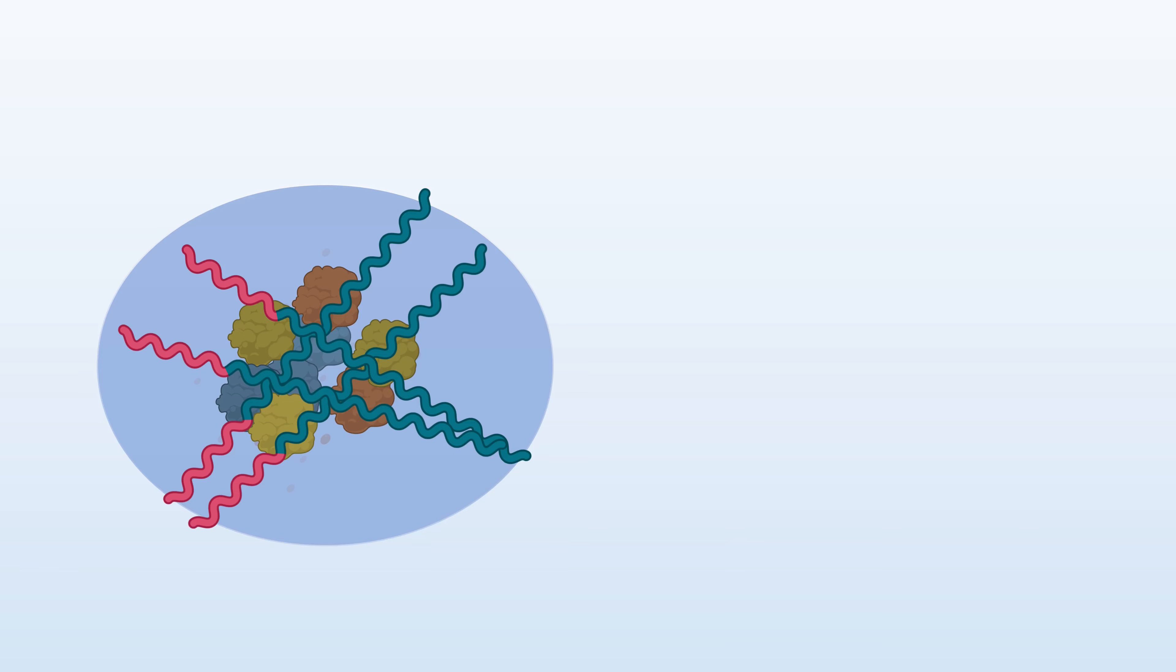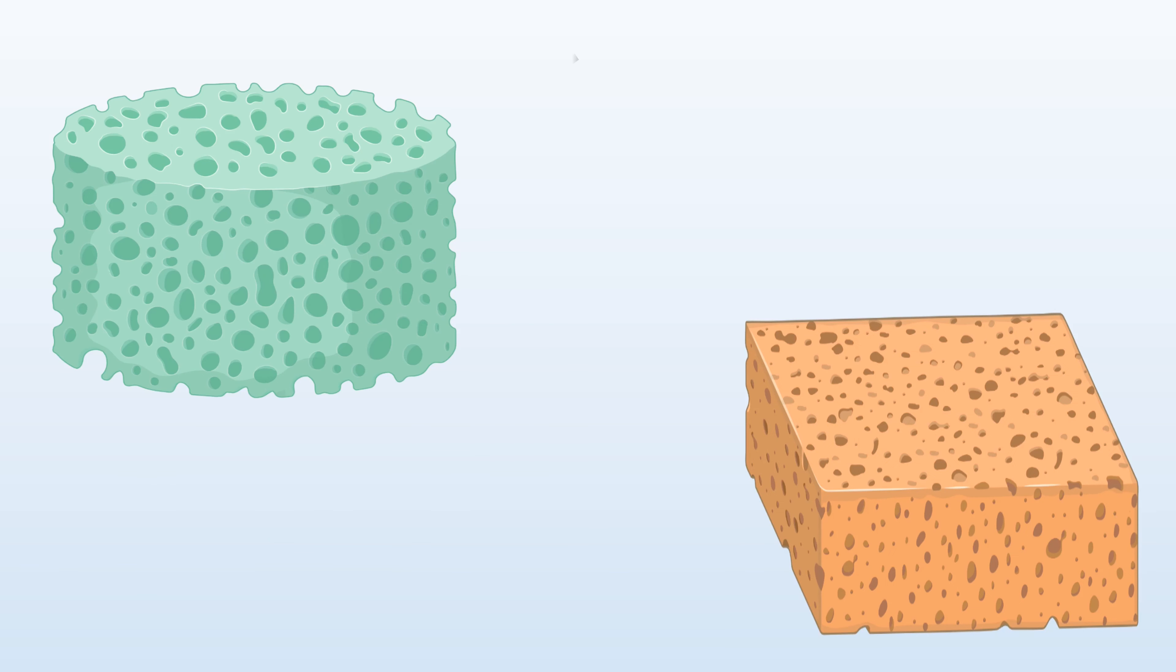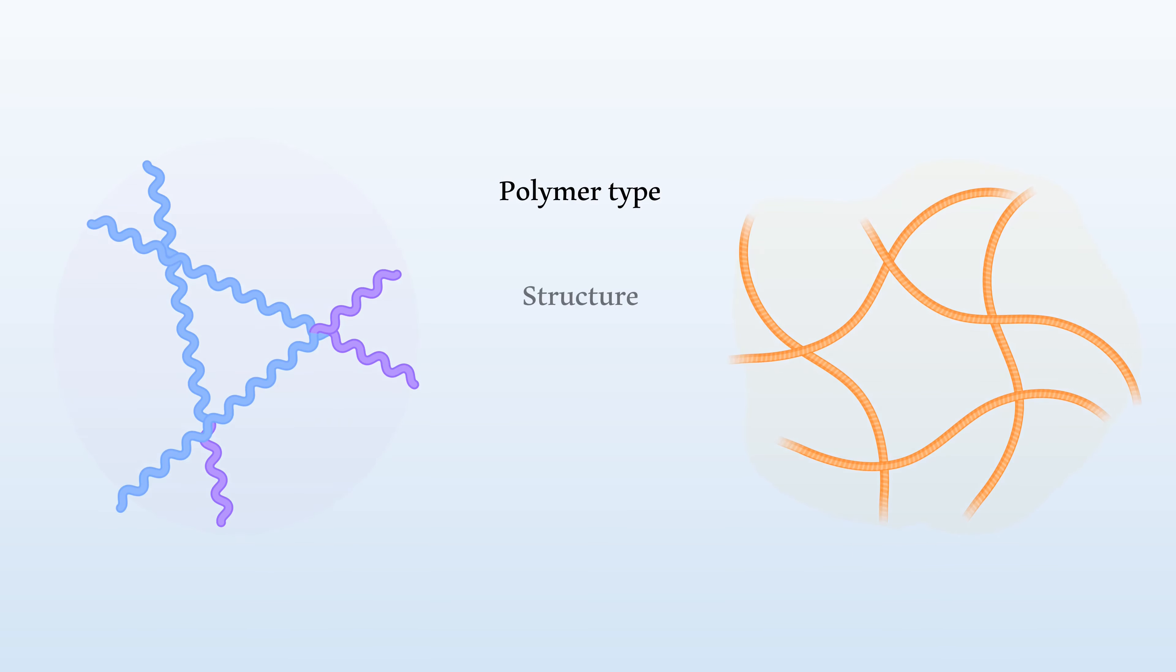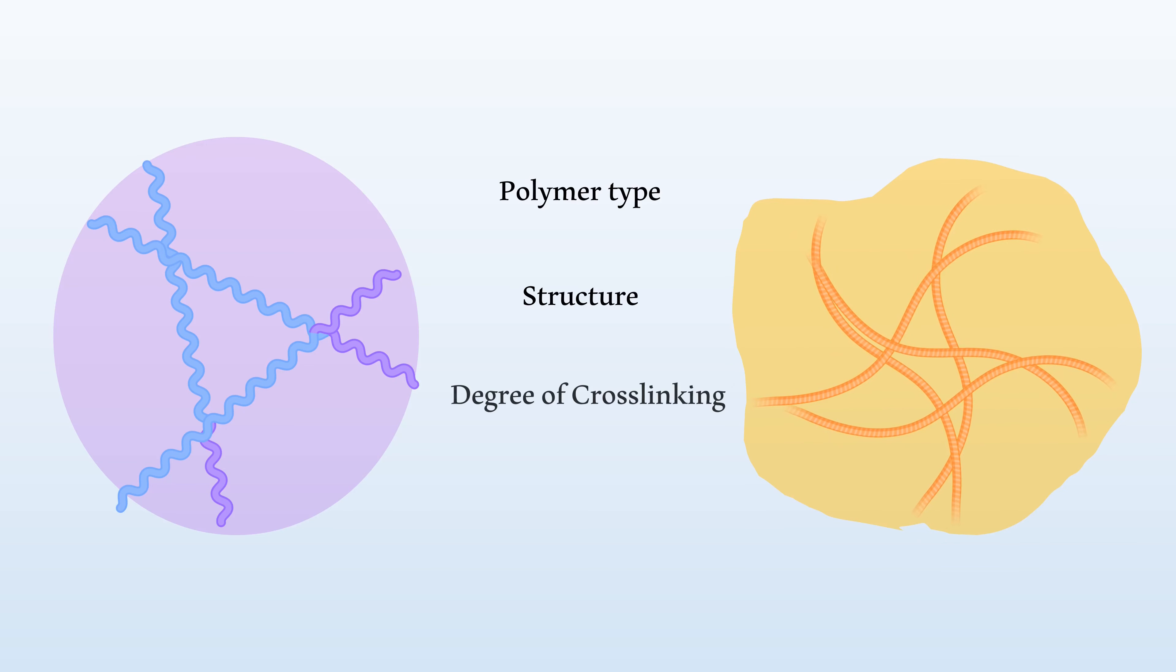Nanogels are considered highly tunable drug delivery systems and can be designed to release a drug in a very specific way. A sponge might hold water differently due to the size of its pores or the type of material. Similarly, the properties of a nanogel depend on the type of polymer used, the structure, the degree of cross-linking, and modifications to the network such as recognition proteins. By manipulating these and other factors, scientists can engineer a diverse range of gels.